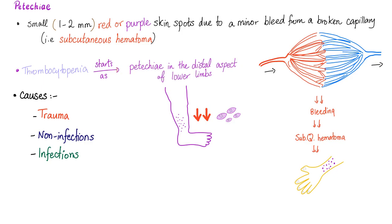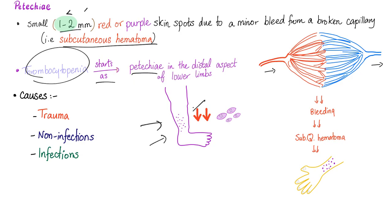Now let's focus more on petechiae. Definition: small, red or purple skin spots due to a minor bleed from a broken capillary — disruption to the vessel wall. It's a subcutaneous hematoma, 1–2 mm in diameter. Thrombocytopenia starts as petechiae in the distal aspect of the lower limbs, so when you see small, tiny, teeny purple dots, it's probably thrombocytopenia. Causes include trauma, non-infectious causes, and infectious causes.